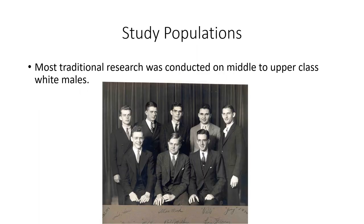There is also a caution about study populations. Most traditional research — most research prior to the last 30 years, and even some since then — was conducted on middle to upper class white males, simply because that was who the study populations were. It's something to consider when looking at early theories. Even though we know they're wrong in some ways now, they may be right to a lesser extent about middle to upper class white males, but not about the population as a whole.